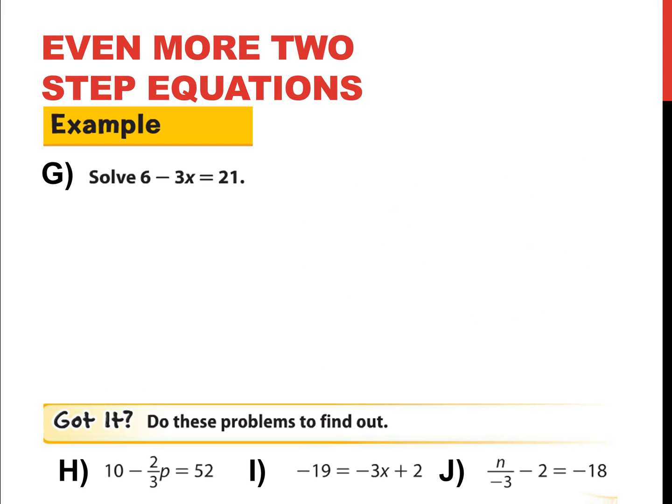Awesome. Even more two-step equations. I know I have a horrible singing voice. Sorry. So example G is 6 minus 3x is equal to 21. And this is slightly different than our other examples because as I circle the side with the variable, what's being added or subtracted is the term with the variable, minus 3x. So I'm going to look at the number without the variable. And that number without a variable is 6.